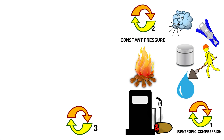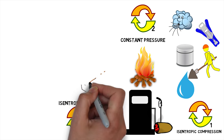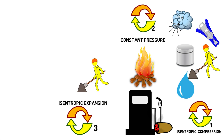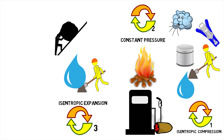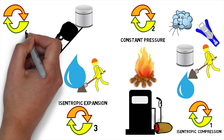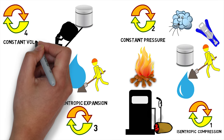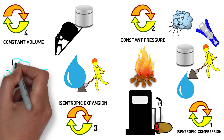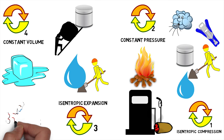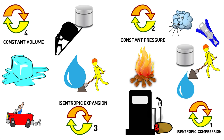Process 3 is isentropic expansion where work is done by the fluid to push the piston — this produces usable work. Process 4 is reversible constant volume cooling wherein the residue exhaust is vented out.